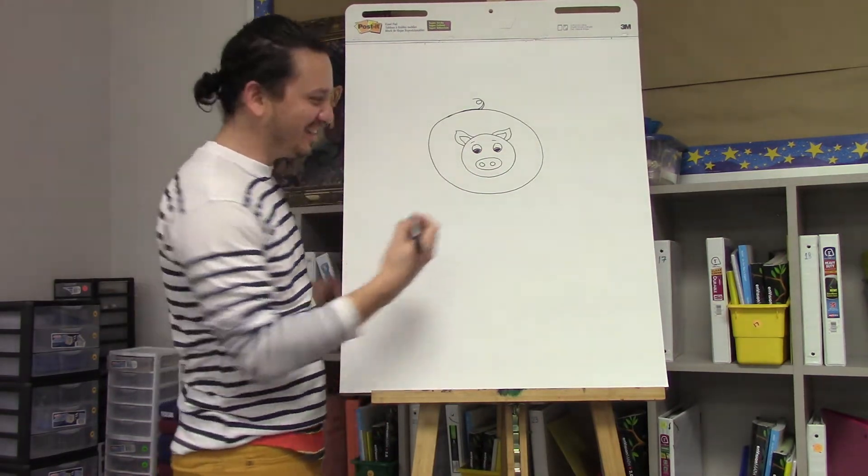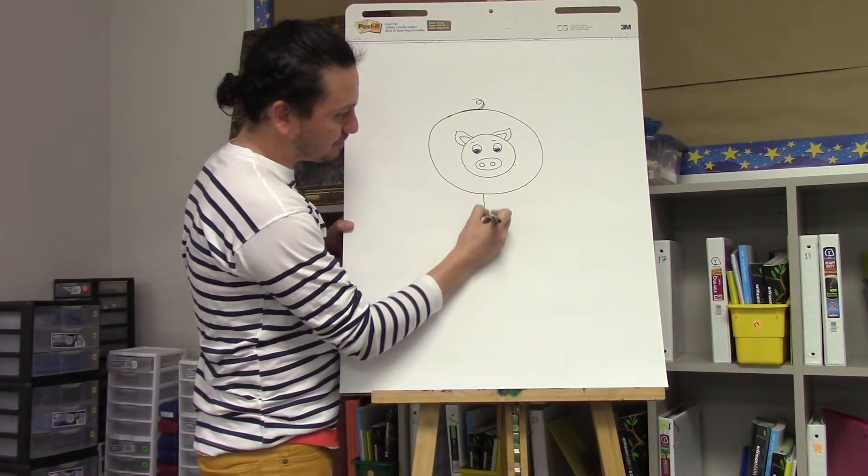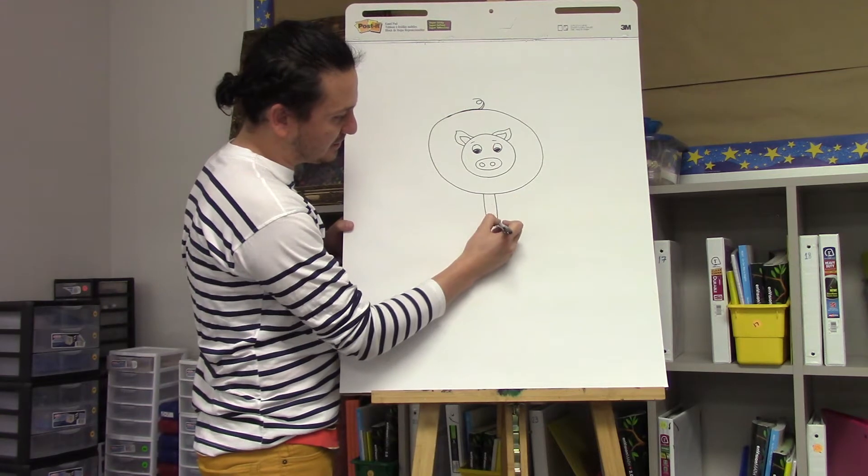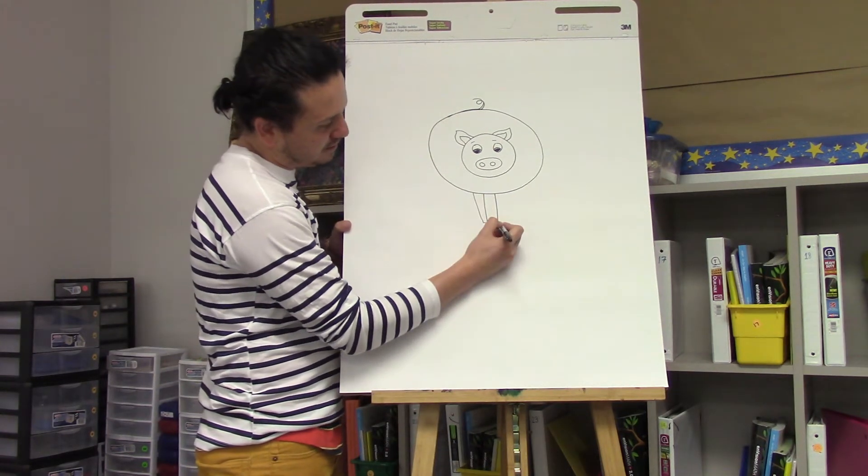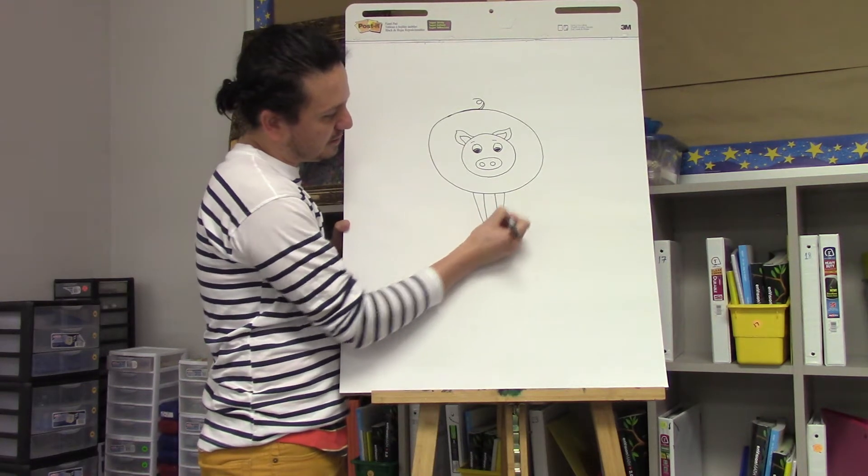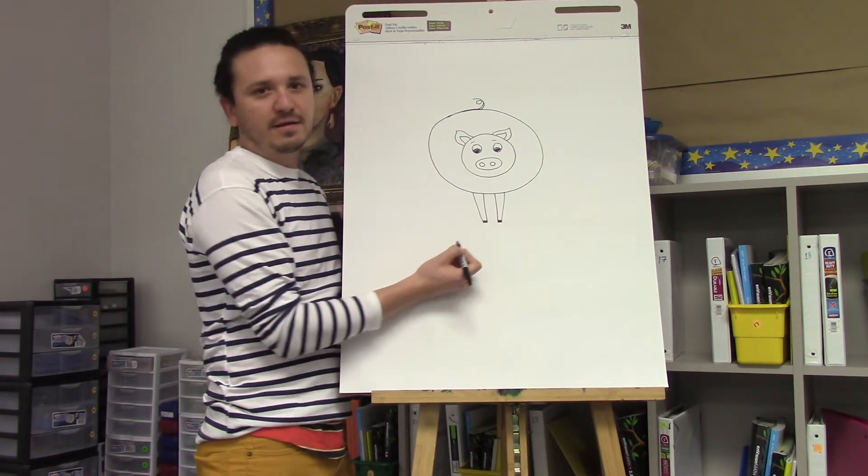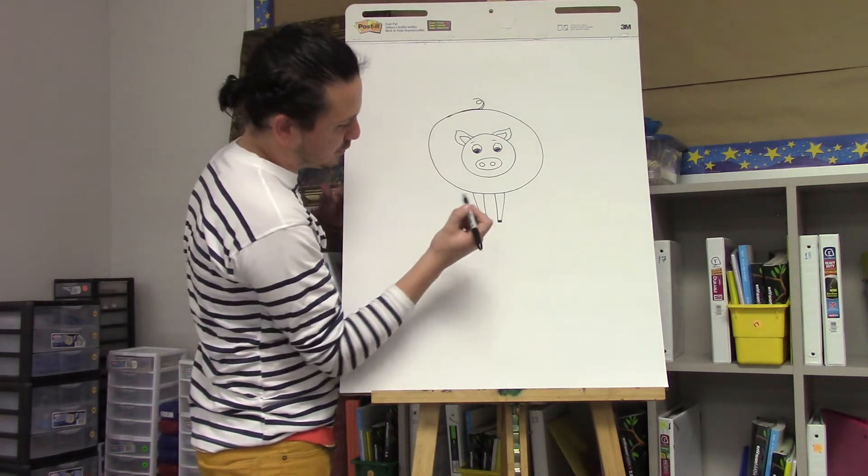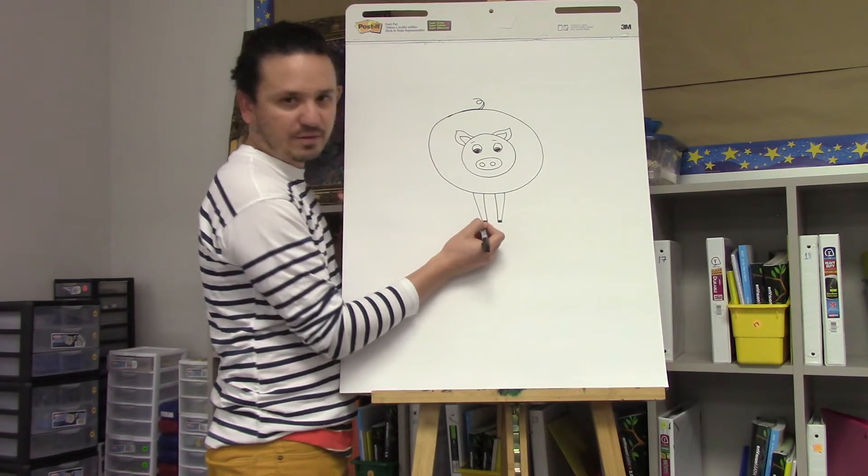Now we're going to add the legs, and it's super easy. You're going to make two vertical lines and then bring it up. Make this darker because that's the hoof, and then you do two more. Since the other two are the back ones, they need to be a little bit shorter than the ones in the front.